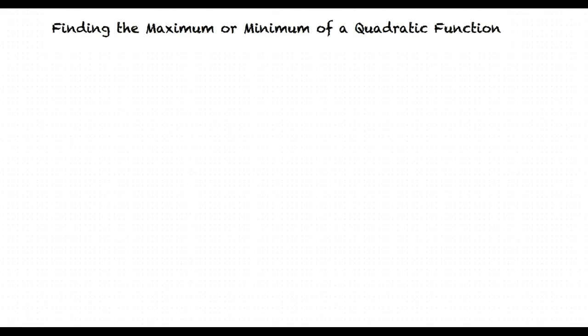An example of a function with a minimum looks like this. A maximum in a quadratic function is the highest point that the quadratic function reaches. For a quadratic function to have a maximum, the function's graph has to face downwards, or in other words, have an upside-down U shape. An example of a quadratic function with a maximum looks like this.